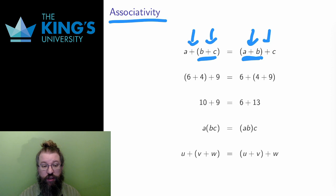If I do 6 plus 4 first, I get 10, and 10 plus 9 is 19. Or if I do 4 plus 9 first, I get 13, and 6 plus 13 is 19 as well. Either bracketing works. Addition is associative. Notice that the order of the numbers is never changed here. This is not commutativity where I change the order, I just change the bracketing.